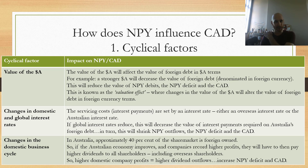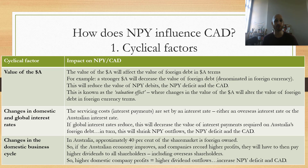Another cyclical factor is changes in domestic and global interest rates. The servicing costs — interest payments — are set by an interest rate, which could be an overseas interest rate in the country lending Australia money, or the Australian interest rate. If Australia borrows money from overseas and that country's interest rates reduce, this will decrease the value of interest payments required on Australia's foreign debt. In turn, this will shrink the value of NPY outflows, reduce the NPY deficit, and the current account deficit itself.